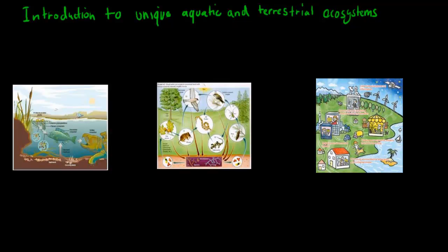Welcome to the introduction video for the unique aquatic and terrestrial ecosystems chapter. What we'll cover in this chapter is a couple of things. First of all, we're going to talk about interactions between different species and animals.